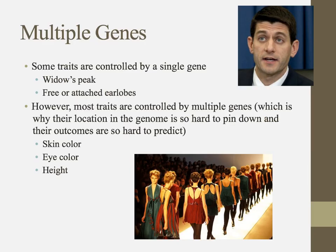When we talk about genetics, we usually simplify how traits are controlled and focus on ones controlled by a single gene, like whether or not you have free earlobes or attached, or whether or not you have a widow's peak. However, most traits are controlled by multiple genes on many different chromosomes, which is why their location in the genome is so hard to pin down. Great examples of that are things like skin color, eye color, and height.